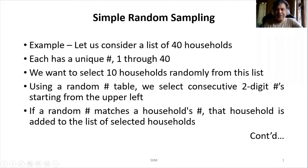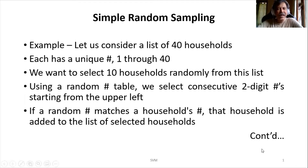Hello everyone. In this video and in the subsequent videos we'll be seeing about different sampling methods, specifically probability sampling methods. The very first one is simple random sampling. To understand simple random sampling, we have taken an example — consider a list of 40 households, meaning 40 houses.